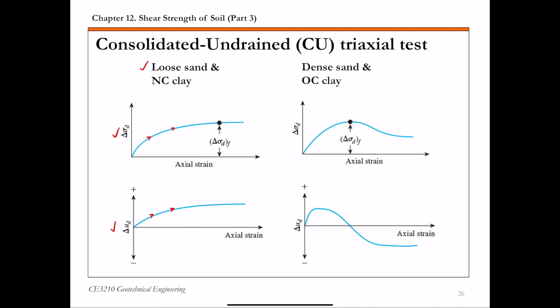On the right-hand side is the behavior of dense sand and overconsolidated (OC) clay. For this type of soil, the deviator stress initially increases with axial strain until it reaches a peak value, delta sigma dF, which we define as the failure deviator stress, and then decreases after that peak. For the excess pore water pressure, it initially increases and then starts to decrease as you continue to shear the specimen. This decrease is because there is a tendency for the soil to dilate — to expand — as you shear it, which is a characteristic behavior of dense sand and OC clay.